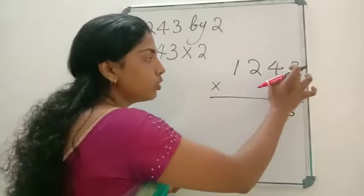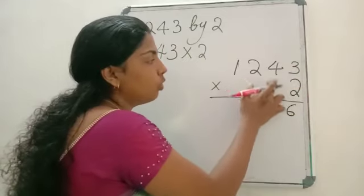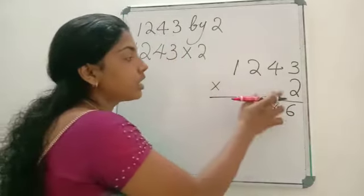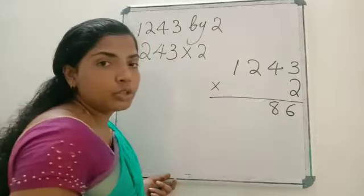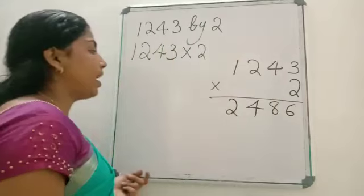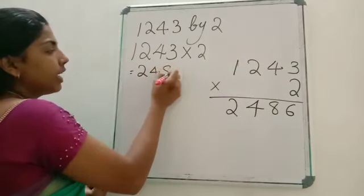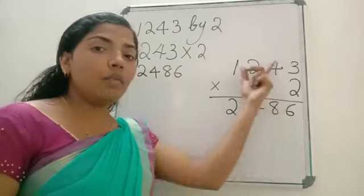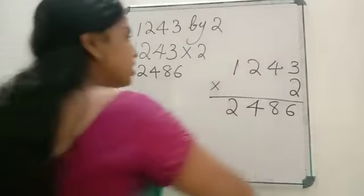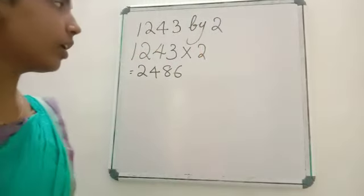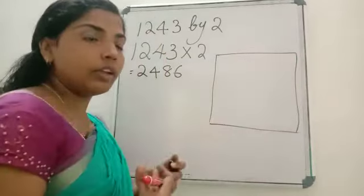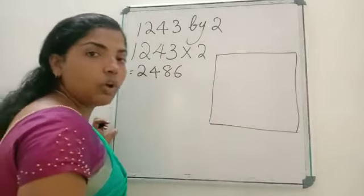So 2 into 3 is 6. Next, 2 into 4, the number in the 10's place: 2 into 4 is 8. Write that 8 just below the 4. Next, 2 into 2: 2 into 2 is 4. Then 2 into 1: 2 into 1 is 2. So the answer is 2,486. You have to do this in the working column — either write it directly and multiply, or arrange it in columns and write.